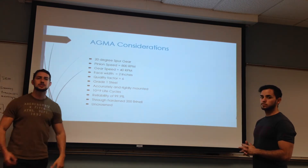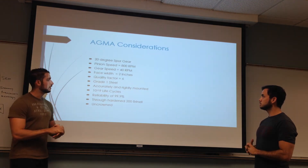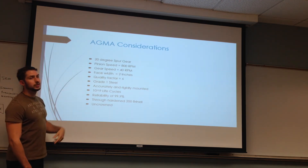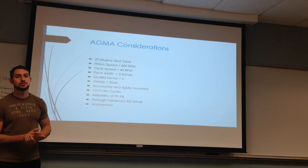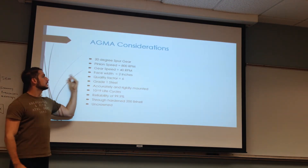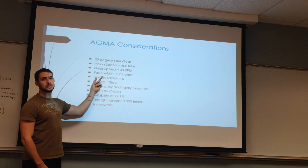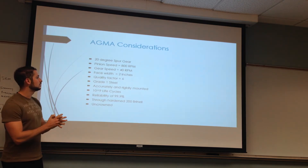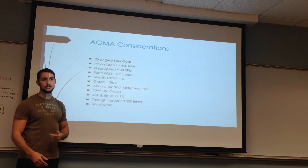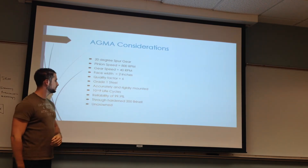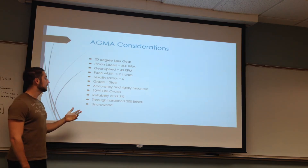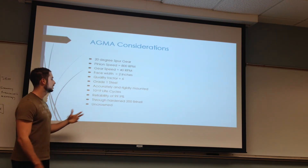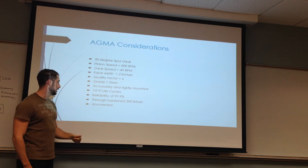Here we have the AGMA considerations to calculate all the equations, contact stress, and bending. We used a 20-degree pressure angle. The pinion speed was set to 800 RPM, which was a requirement, and because of that the gear speed is going to be 40 RPM. The face width used was 2 inches, the quality factor was 6, and the grade of steel was grade 1. It was accurately and rigidly mounted. The life cycle was 10 to the power of 9, and the reliability was 99.9%. There was 3200 Brinell hardness and it was a crown design.